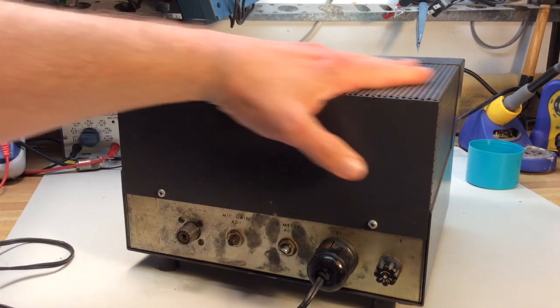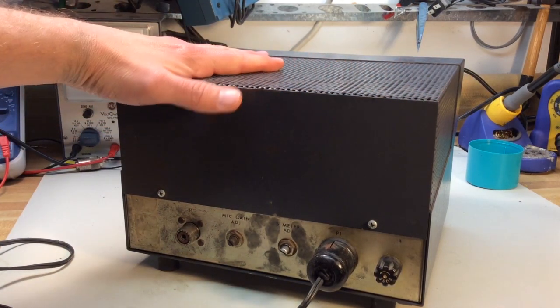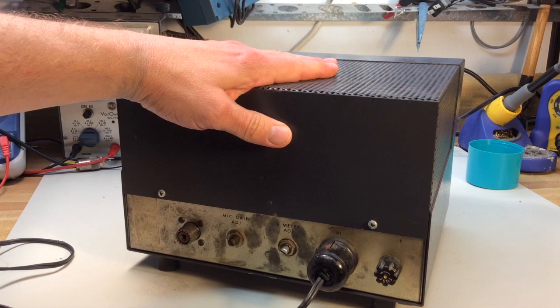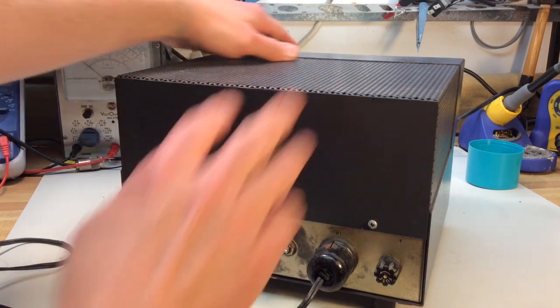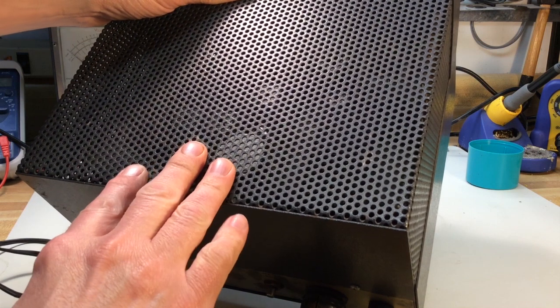And since this is a tube type radio, it does have some heat build up. So it does get quite warm. That's why the ventilation holes in the housing. So it's important not to set anything on top of this radio. It does need some air.